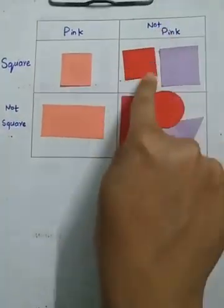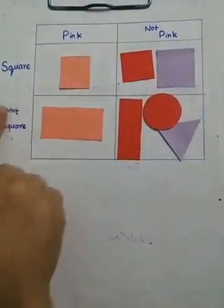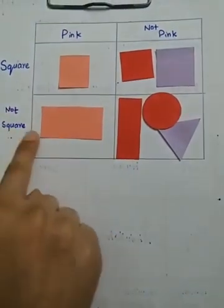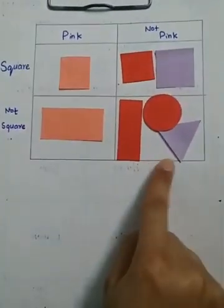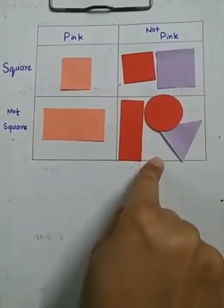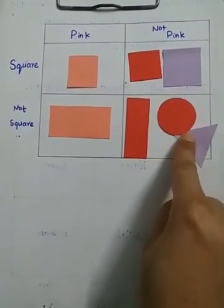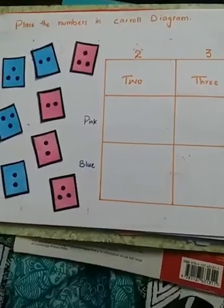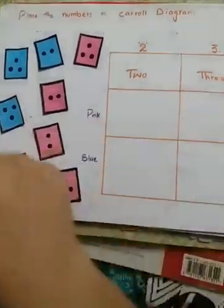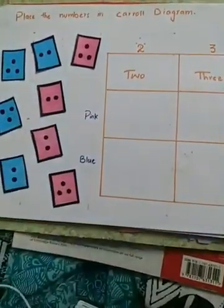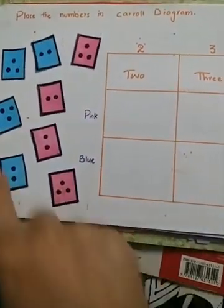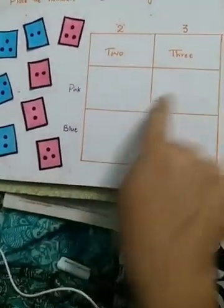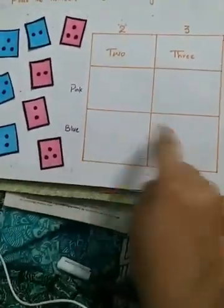So we can see: square of pink color, square of not pink color, not square but pink color, and not square and not pink color — no pink color here and no square here. Now another example: place the numbers in the Carroll diagram. We have some dice here and we have to put these dice in the suitable blocks of the Carroll diagram.